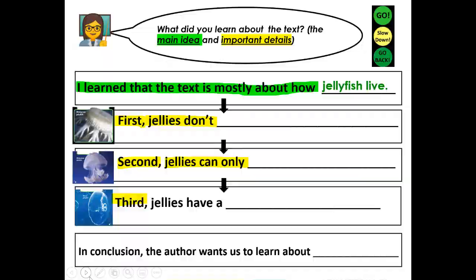And finally, third, jellies have a — what do jellies have? Write your third detail sentence. Make sure you push pause, write your sentence, and when you're finished writing your third sentence, push play to rejoin the lesson.